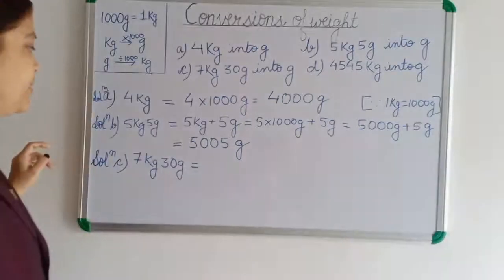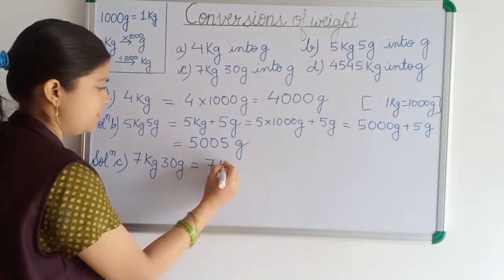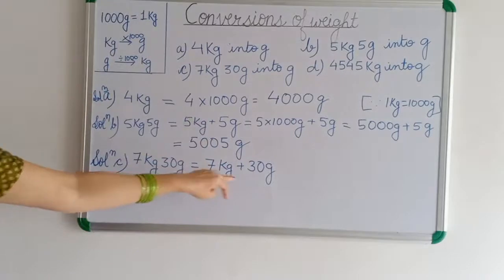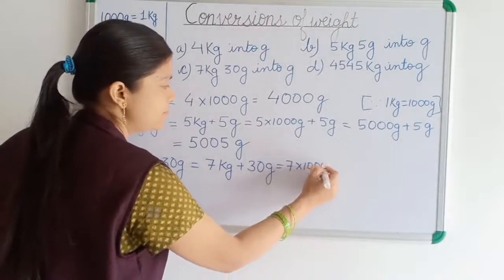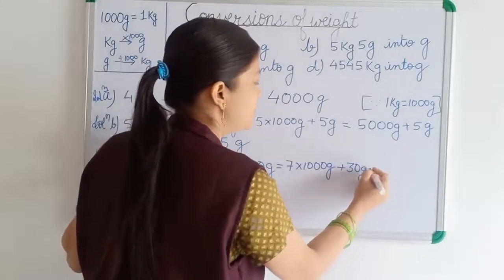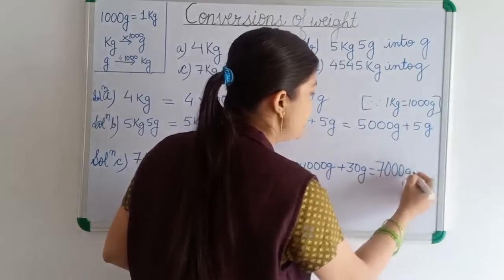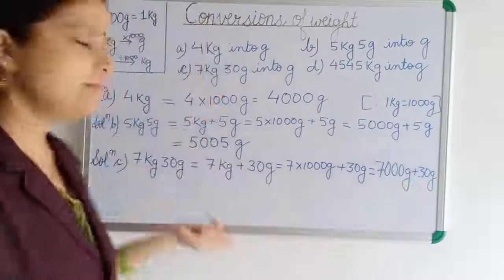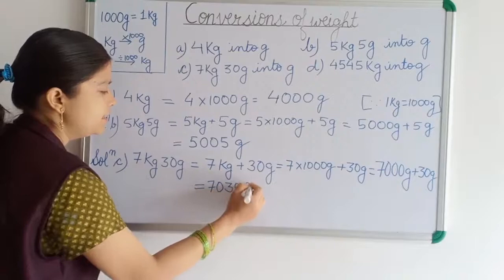We have to convert into gram. The kg and gram are written together. Only kg we have to convert — we multiply by 1000, meaning we remove K and put three zeros. So it becomes 7000 gram, plus 30 gram. Together it will become 7030 gram.